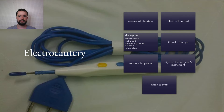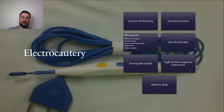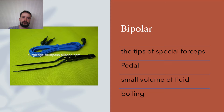Electrocautery involves closure of bleeding points by heat from an electrical current. Monopolar diathermy uses the flow of current from the instrument to the surrounding tissue, then back to the machine via a return plate. Typically, the surgeon grasps the bleeding point with the tips of forceps and asks the assistant to touch the monopolar probe to the forceps and activate the current via a switch. This contact is best made on the surgeon's instrument, avoiding the surgeon's line of sight. It is important to listen carefully for when to stop in order to prevent charring of the tissues.